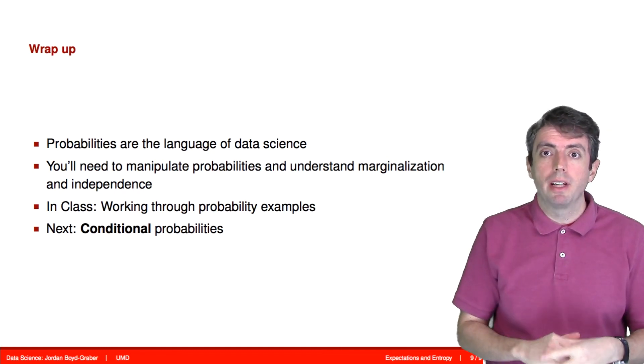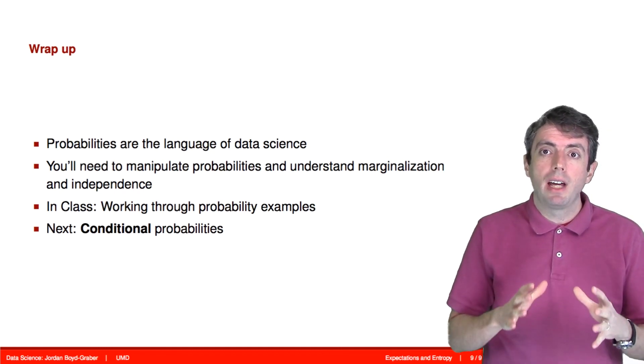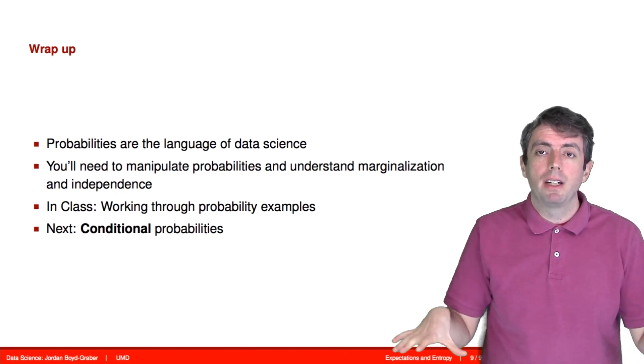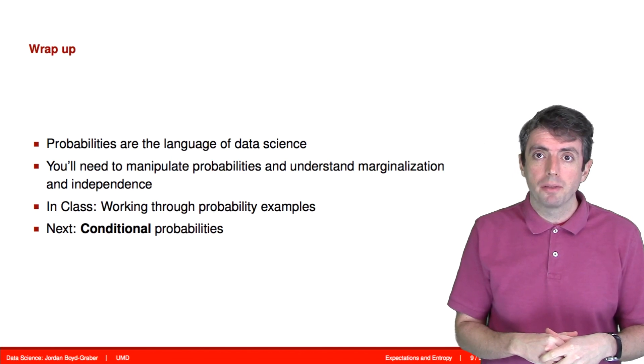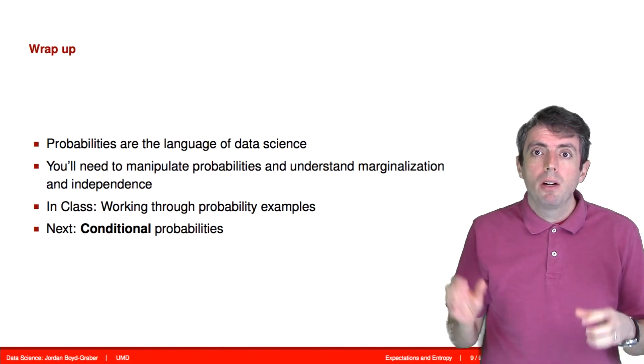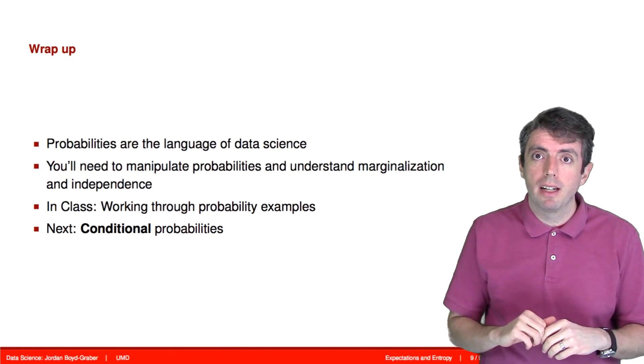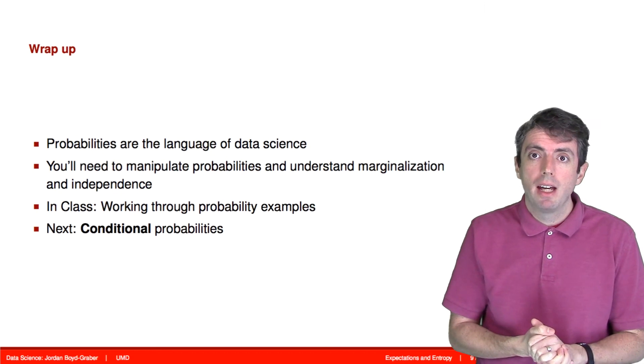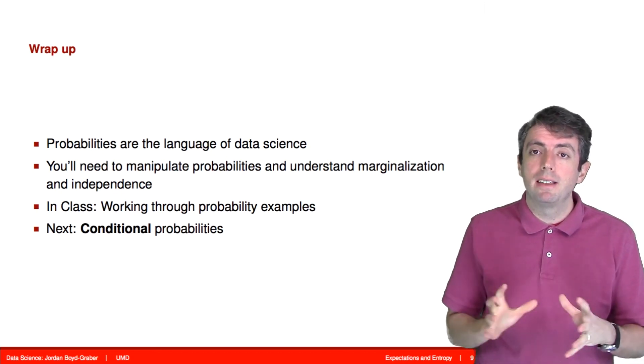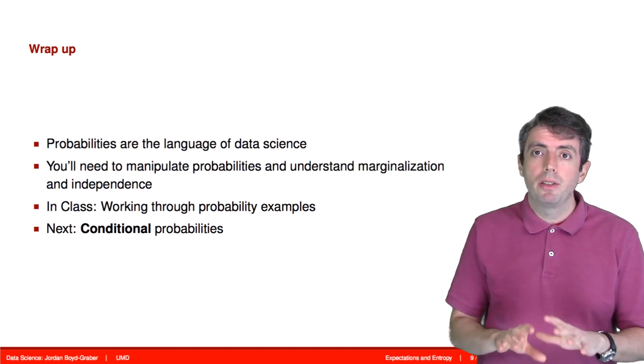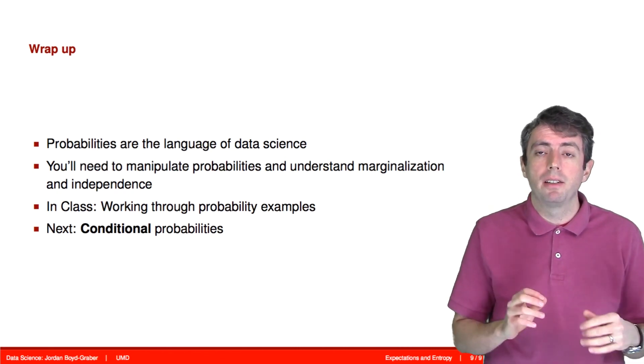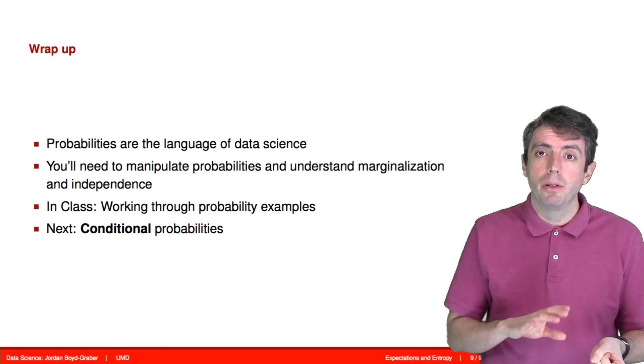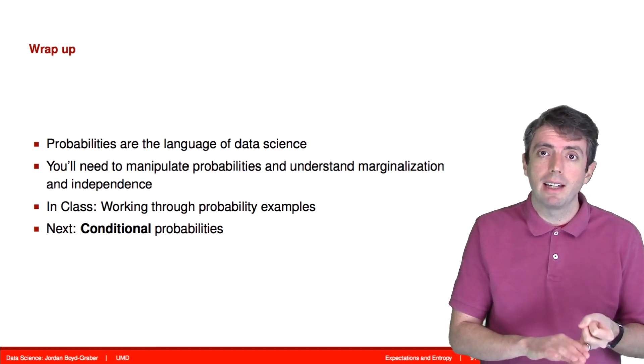I realize this has been a lot, but probabilities are really important to understanding data science. As we work through these very essential concepts, we'll be building the foundation of what we'll use for the rest of this course. Next time, we'll start talking about conditional probabilities, which will make the interactions between random variables a lot richer. In class, we'll work through a lot of examples to give you a better intuition for what it means to have probability distributions and to do operations like marginalization and to take measurements of properties of distributions like the expectation and the entropy.